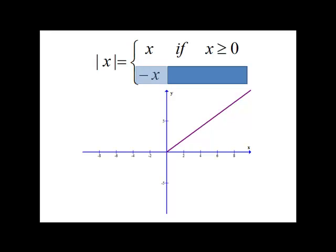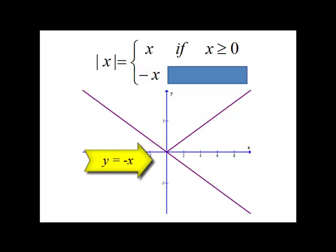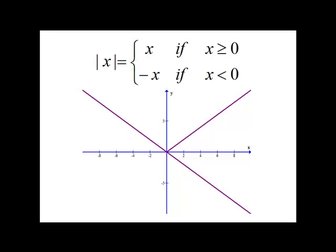Let's take a look at the other piece, which is negative x. Now we can graph y equals negative x very easily. Now we need to identify which piece this is. So we need to see which part of the domain we're referring to, and that's when x is less than zero. So we need to cut that off.